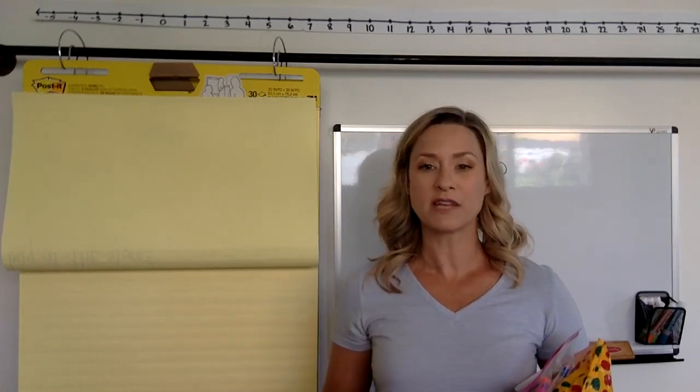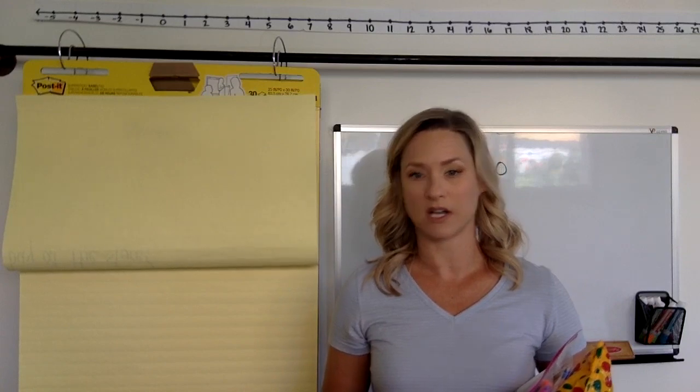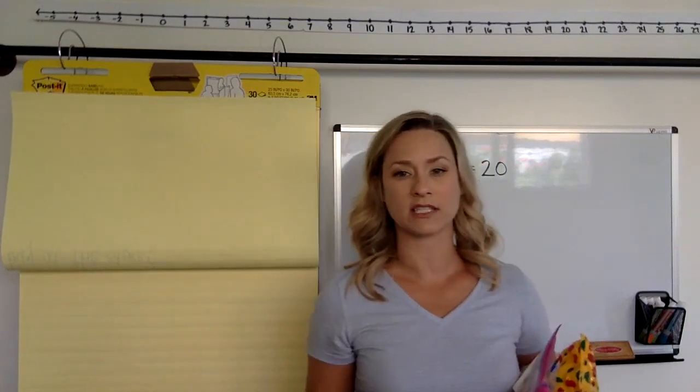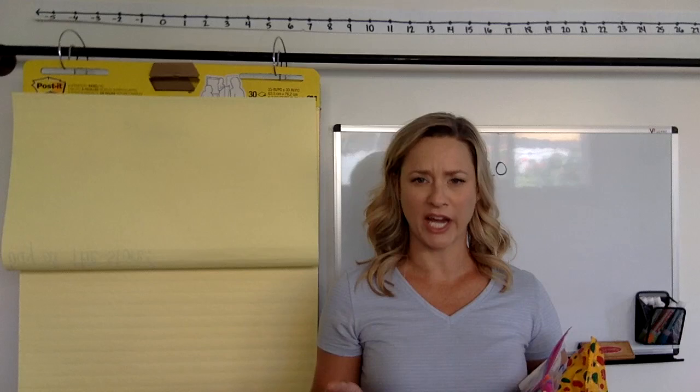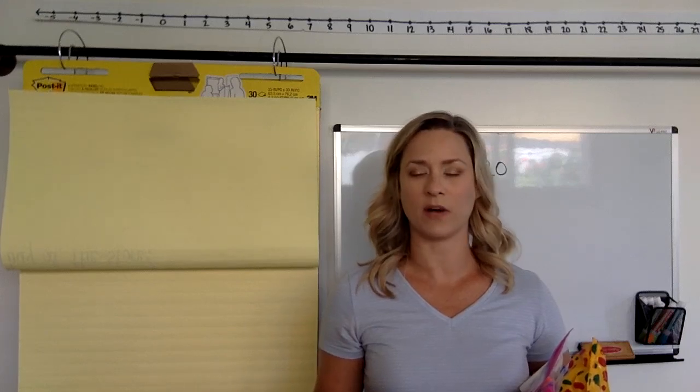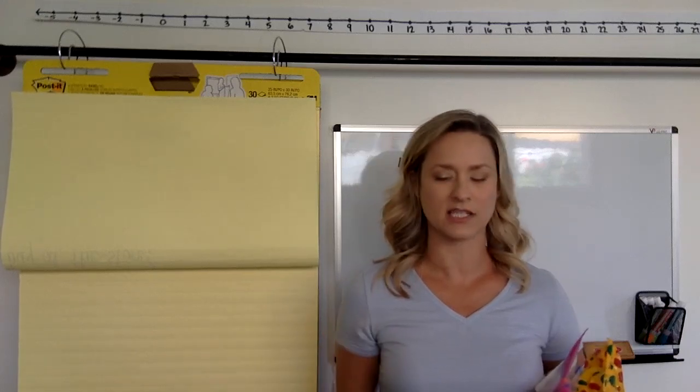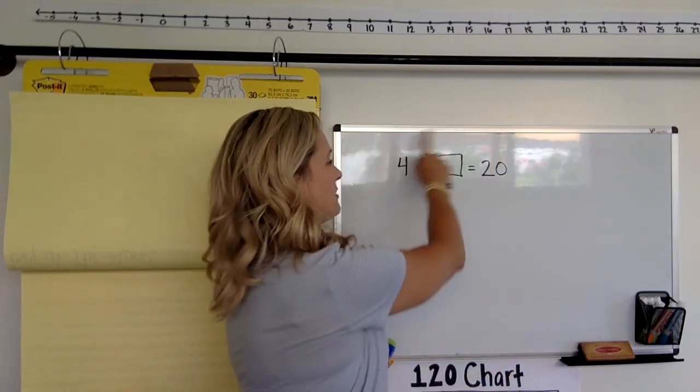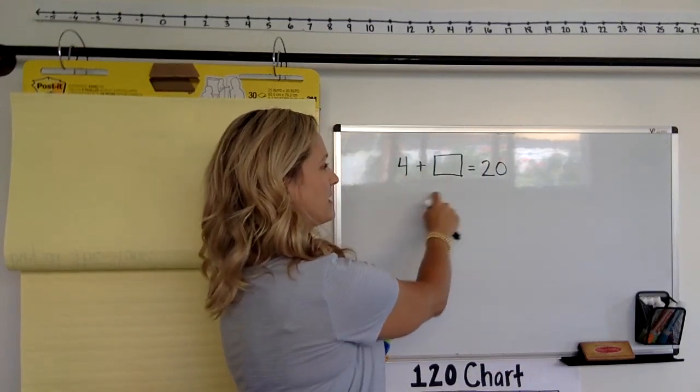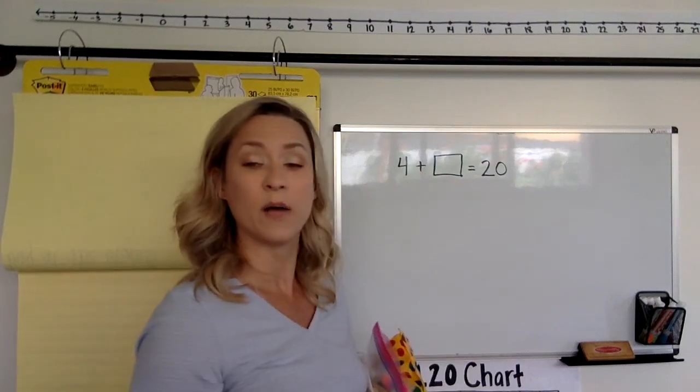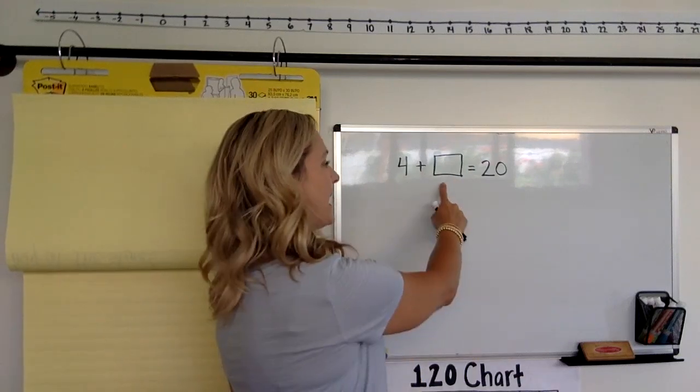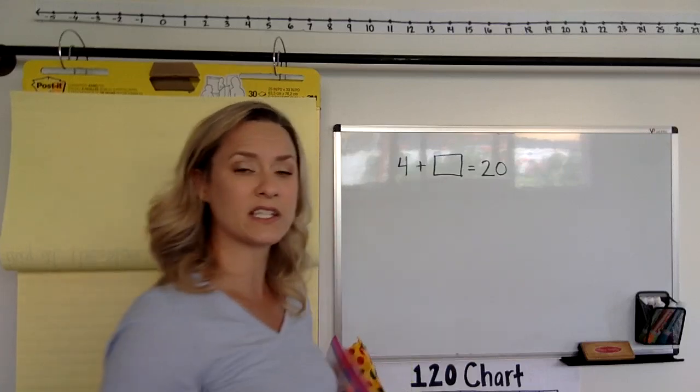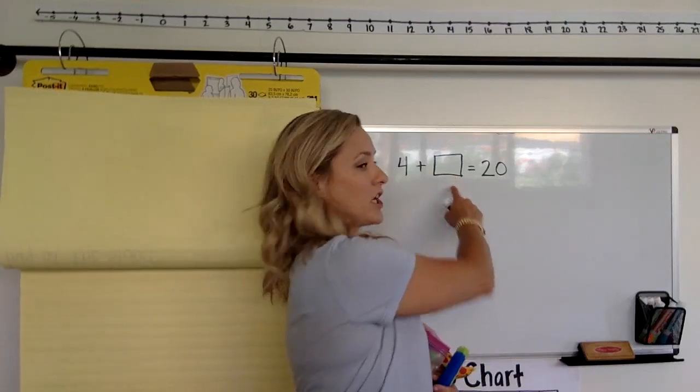The first thing we're going to start off with is a number talk, and in our number talk today we're actually going to be finding a change that we don't know. So I'm going to show you right now what that looks like when it's written out. In this problem here, there's a join happening. So this is a join because we're adding, but we don't know what the change is. So this is called a join change unknown.